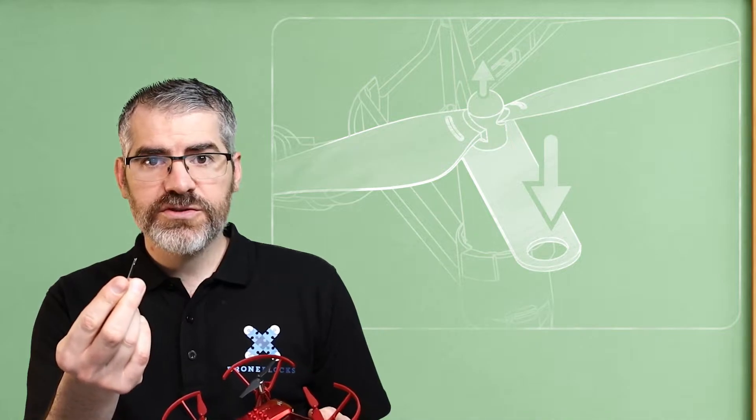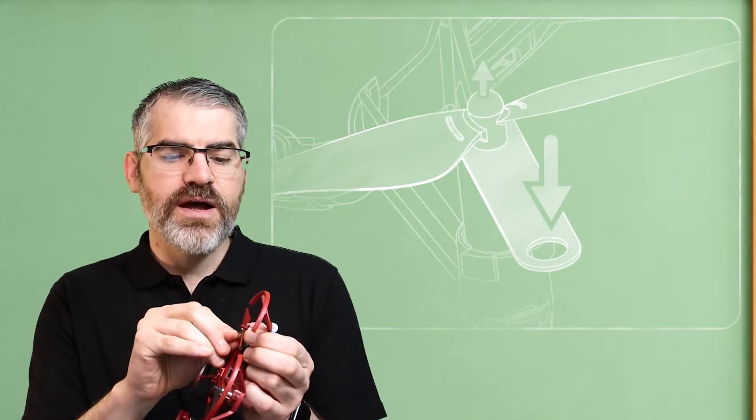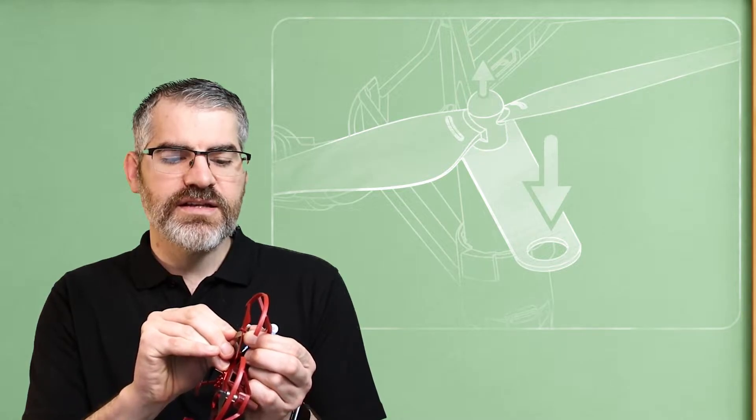Simply take the removal tool, stick it under your propeller, and then you can gently pry off the propeller. Nice and easy.